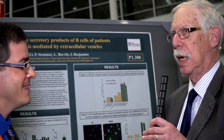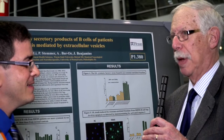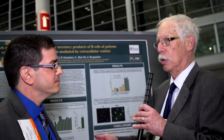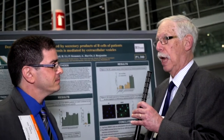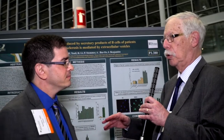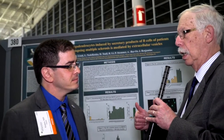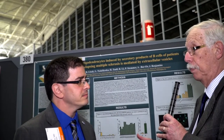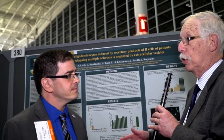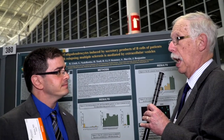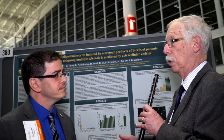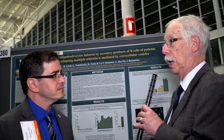What we've found is that the B cells in culture from MS patients — but not controls — make something, some factors that, at least in tissue culture, will kill oligodendrocytes and kill neurons, but not astrocytes or microglia. And now we're trying to figure out what it is, and we've sort of narrowed down what it isn't.